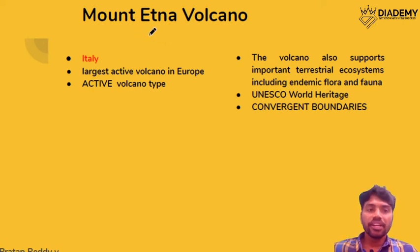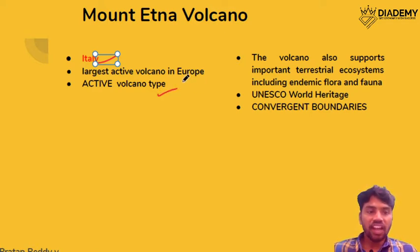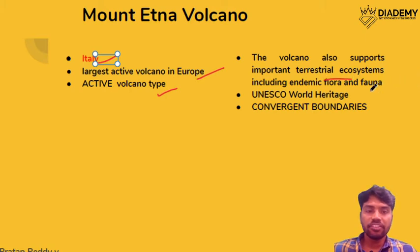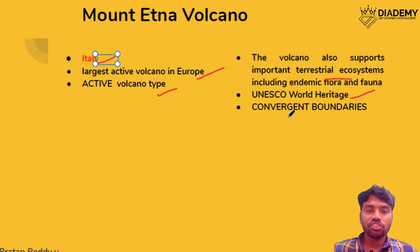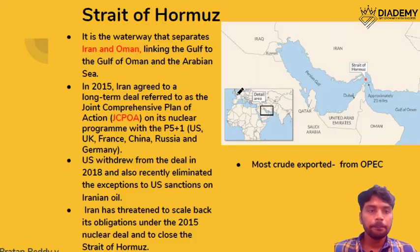Mount Etna is located in Italy and is an active volcano. It is the largest active volcano in the entire European continent. It supports high biodiversity and has been recognized as a UNESCO World Heritage Site. This volcano sits on convergent plate boundaries.